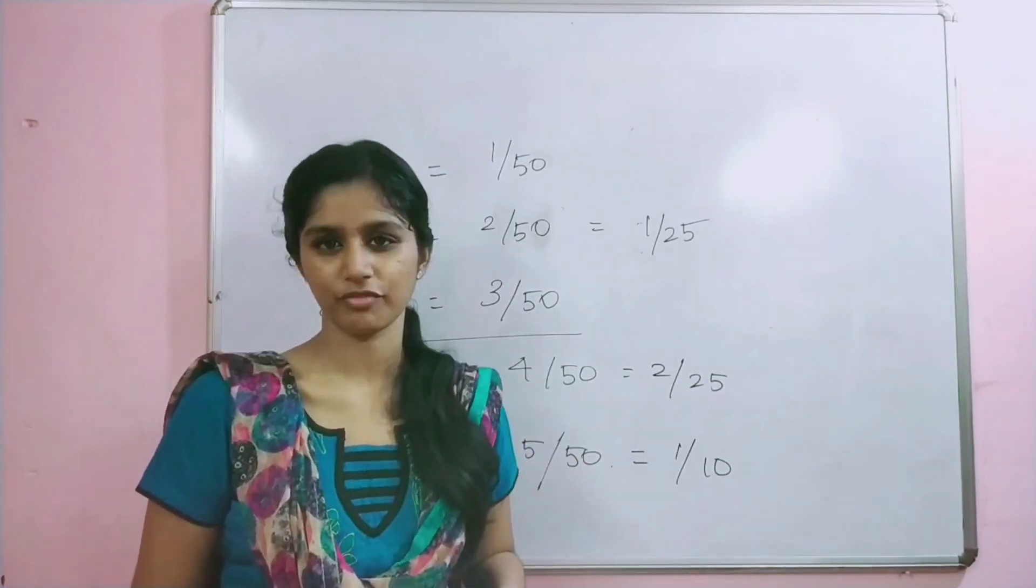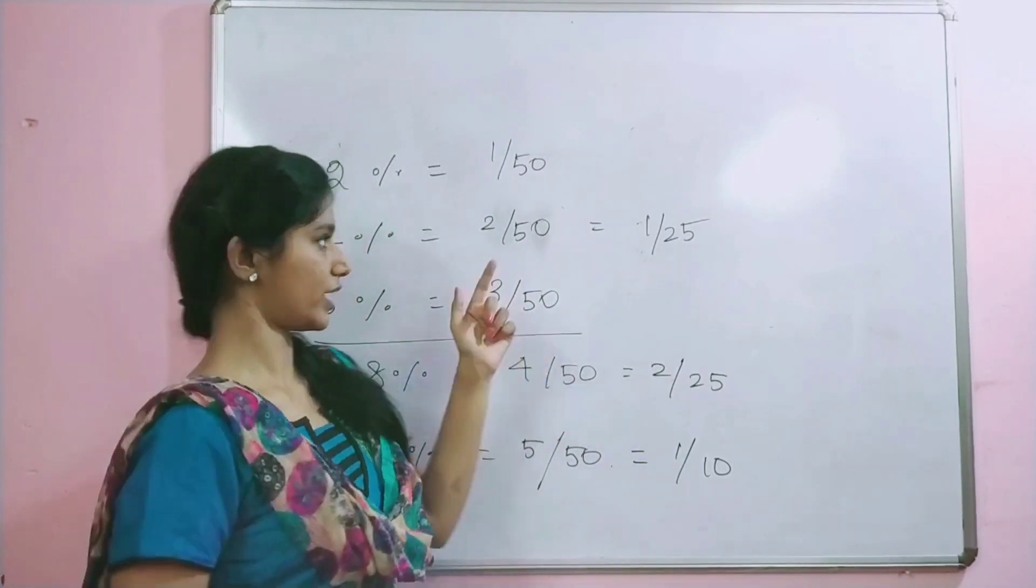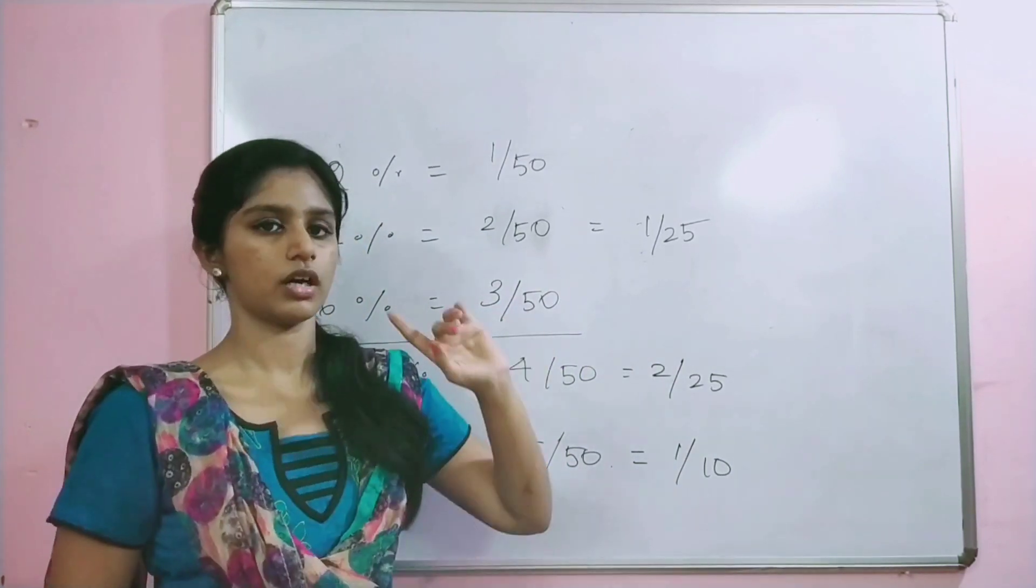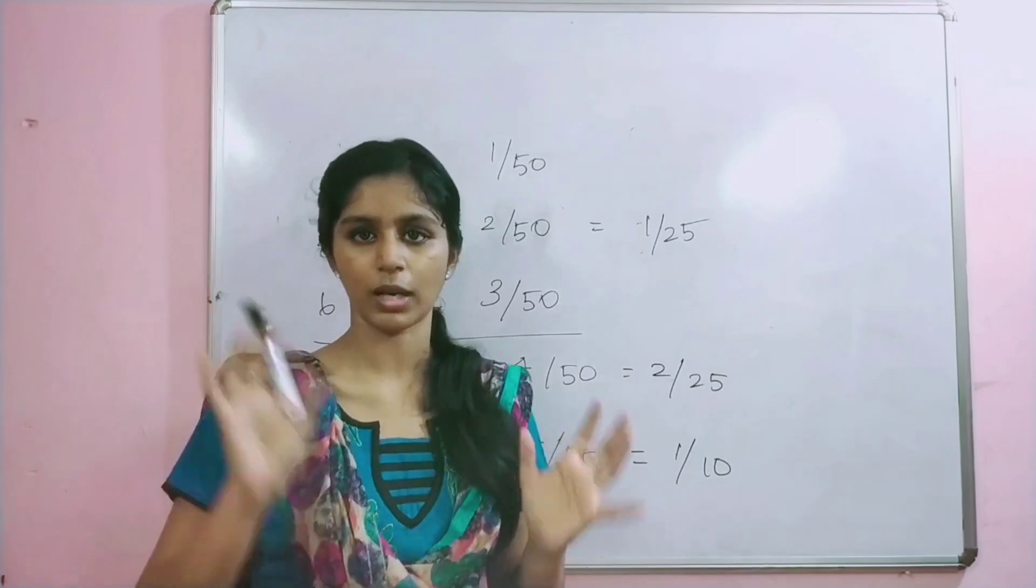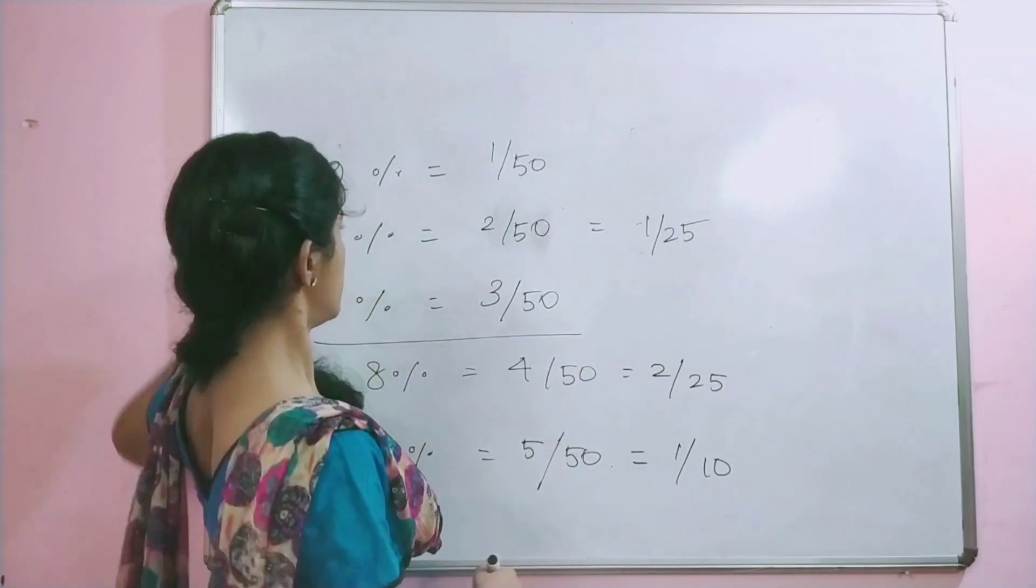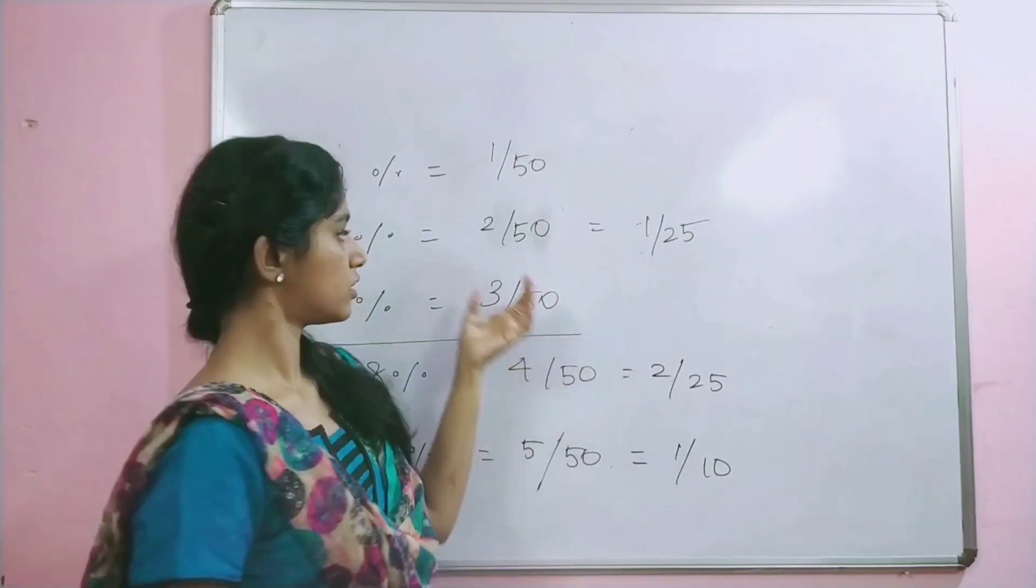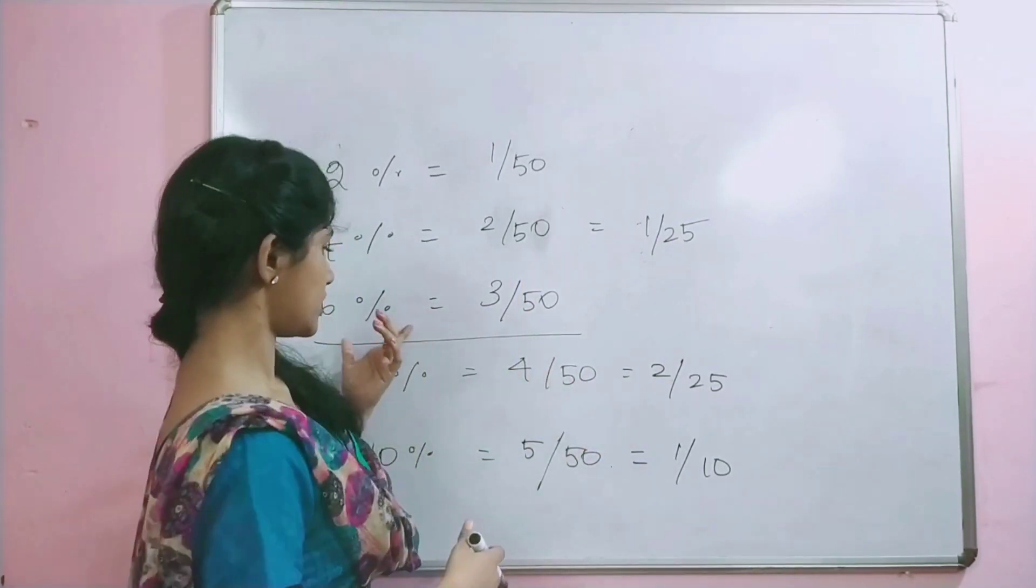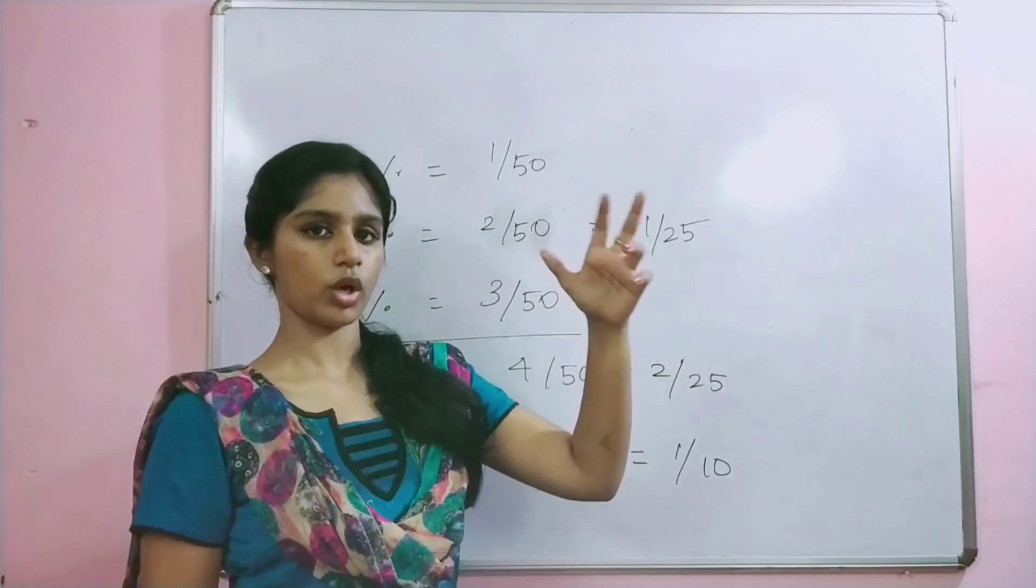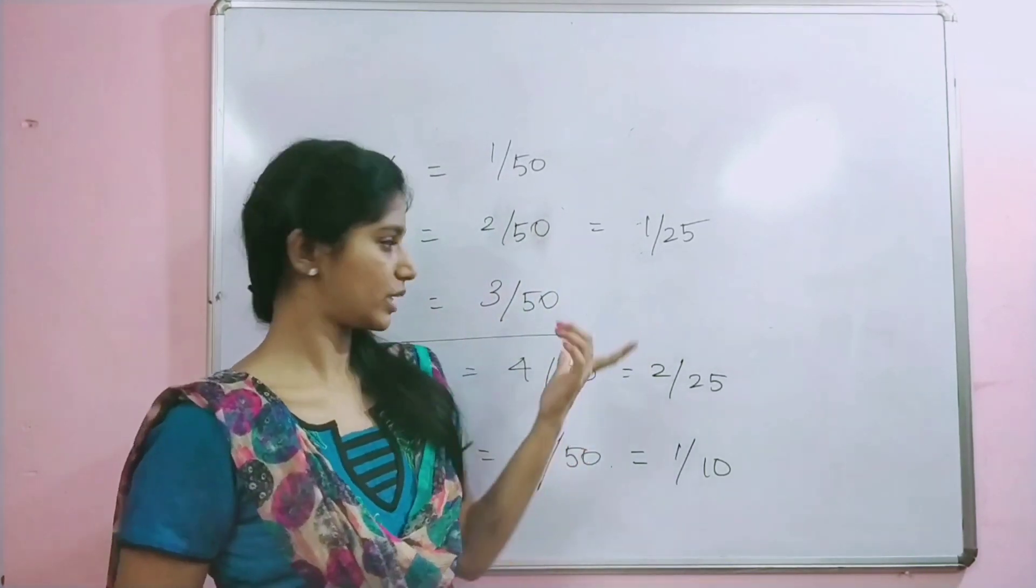Now we have an even series. First, we have multiples of 10. Second, we have numbers ending with 5. And third, we have even numbers like 2, 4, 6, 8, 10, 12. For the denominator, we have to fix it. 2 is 1 by 50. 4 is 2 by 50. 6 is 3 by 50.